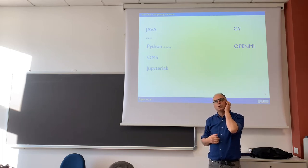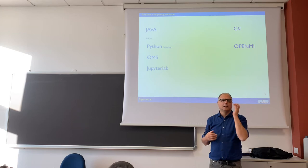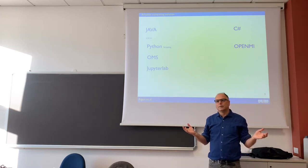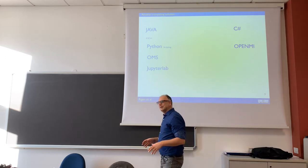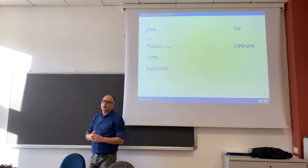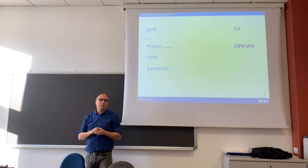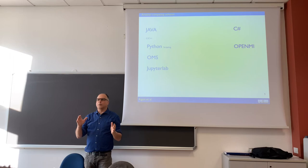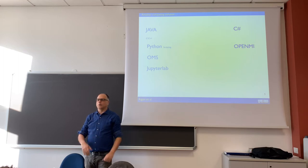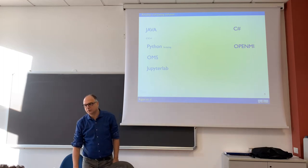Actually, version two of OpenMI — which I think is the current one — is called the Trento version, because we established here in Trento where to go. Then we moved our software to OMS, with a reduction of more than 50% of the lines of code. Our code in OpenMI at 100 lines became 60 lines in OMS — 40% less code.